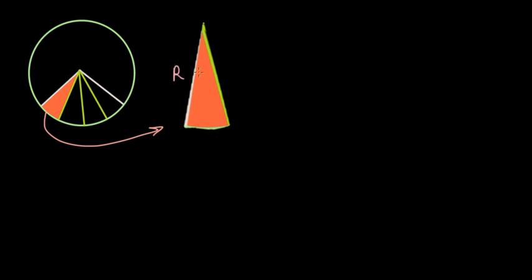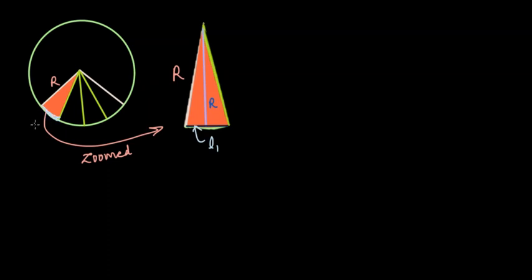This length here is the radius of the circle — this is R, and this is also R. This is just a zoomed version. Now, if this resembles a triangle, then we can find the area of the triangle if we know the height and the base. If we make more and more divisions, the height of the triangle will actually resemble the radius R. The base here is equal to L1, and this L1 is as good as the curved length of this small pie.